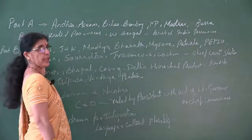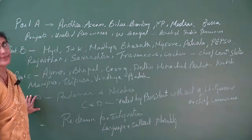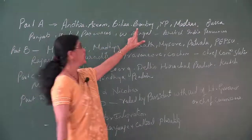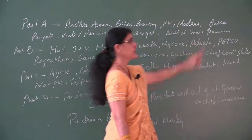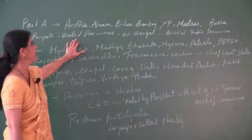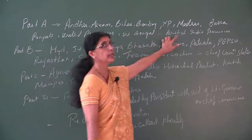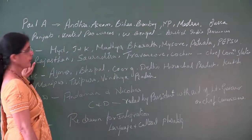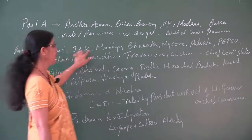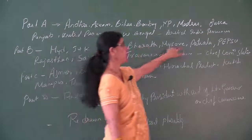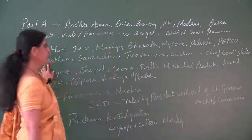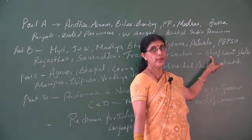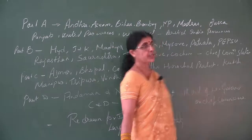Part A consisted of Andhra, Assam, Bihar, Bombay, Madhya Pradesh, Madras, Orissa, Punjab, United Provinces, and West Bengal — all formerly under British Indian provinces. Part B states consisted of Hyderabad, Jammu and Kashmir, Madhya Bharat, Mysore, Patiala, Pepsu, Rajasthan, Saurashtra, and Travancore-Cochin — all formerly chief commissioners' states. Part C included Ajmer, Bhopal, Coorg, Delhi, Himachal Pradesh, Kutch, Manipur, Tripura, and Vindhya Pradesh. Part D was Andaman and Nicobar Islands. Both Part C and Part D states were ruled by the President, aided by a lieutenant governor or chief commissioner.